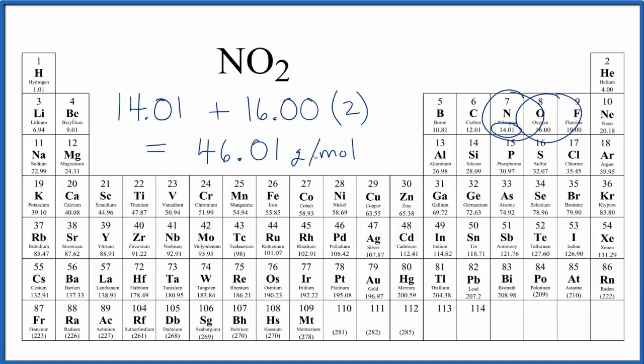What this means is if we have one mole of NO2, it'll have a mass of 46.01 grams, or if we have 46.01 grams of NO2, we'll have one mole.